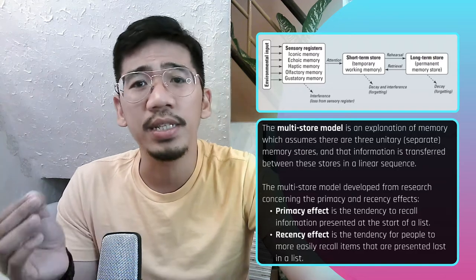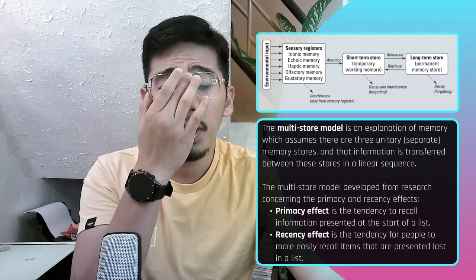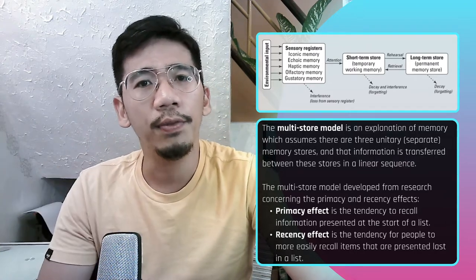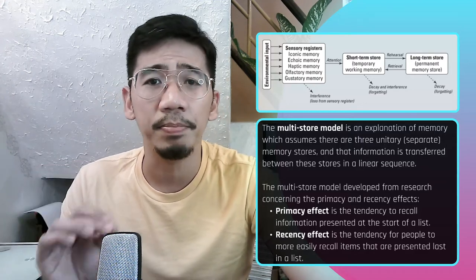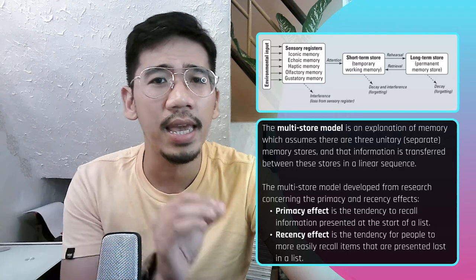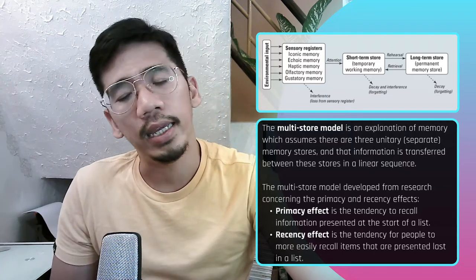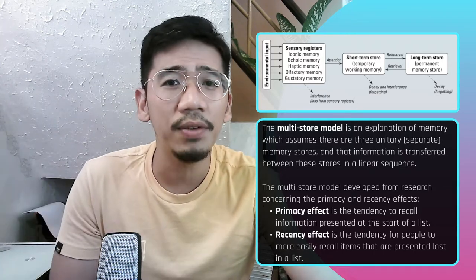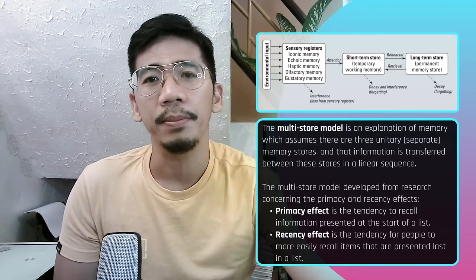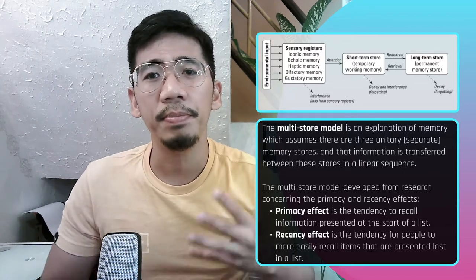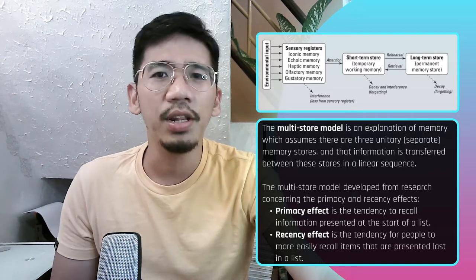When you consider the primacy and recency effects together, what you see is a U-shaped curve, also known as the serial position curve, for the recall of items in a list. Items at the end of the list are still in short-term memory and so easier to recall. Items at the beginning have been transferred to long-term memory. But items in the middle haven't been transferred to long-term memory and don't remain in short-term memory, so they are forgotten.